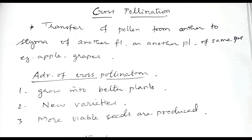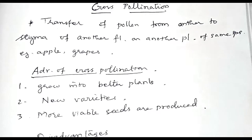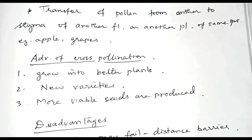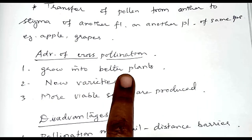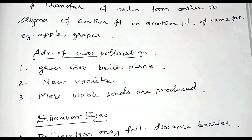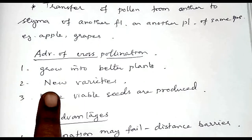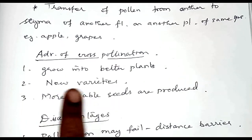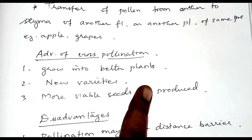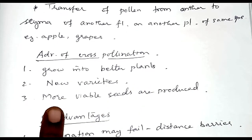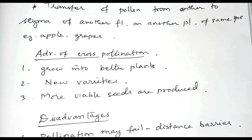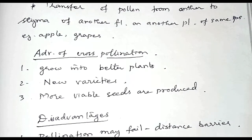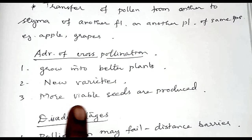The advantages of cross-pollination: cross-pollination produces seeds which germinate properly and grow into better plants. The seeds produced from cross-pollination give rise to new varieties of plants, which is advantageous. Cross-pollination also produces more viable seeds — all seeds will be very much efficient to produce new individual plants.